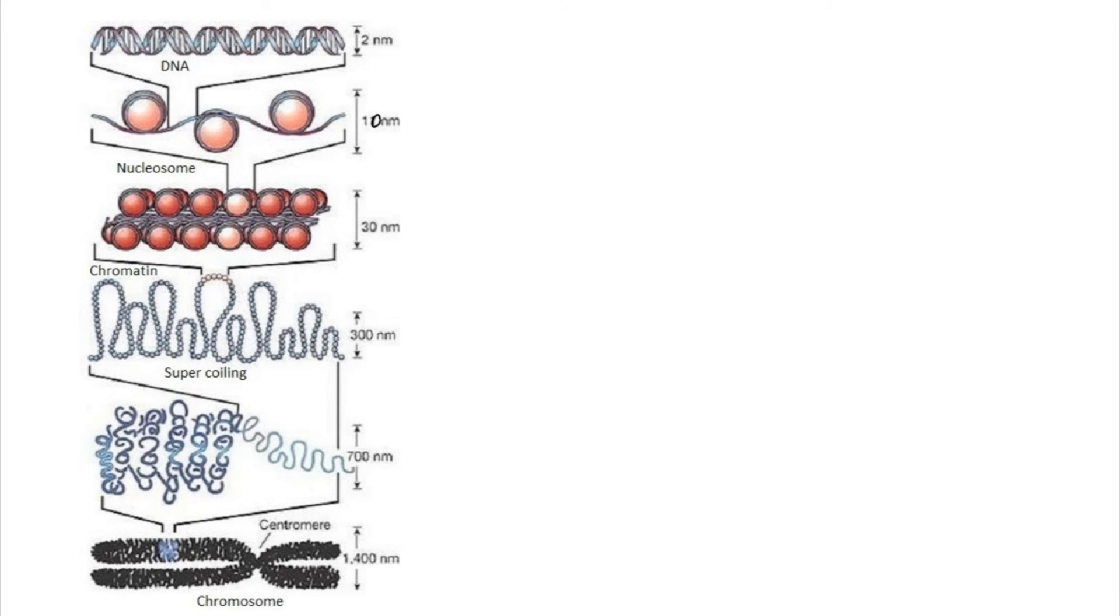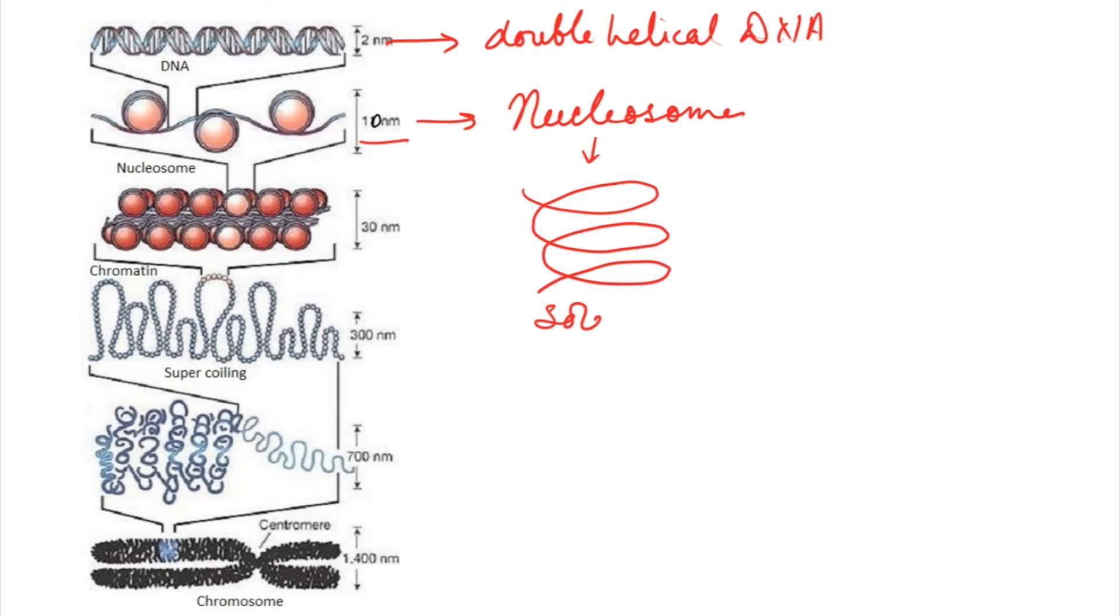This diagram shows how the DNA is coiled to form chromosomes. This is the double helical DNA, which is 2 nanometers in thickness, which coils to form the nucleosomes with the help of histone proteins that is 10 nanometers in thickness. The nucleosomes are then coiled in the form of a solenoid having 6 nucleosomes per coil. They form a diameter of 30 nanometers.